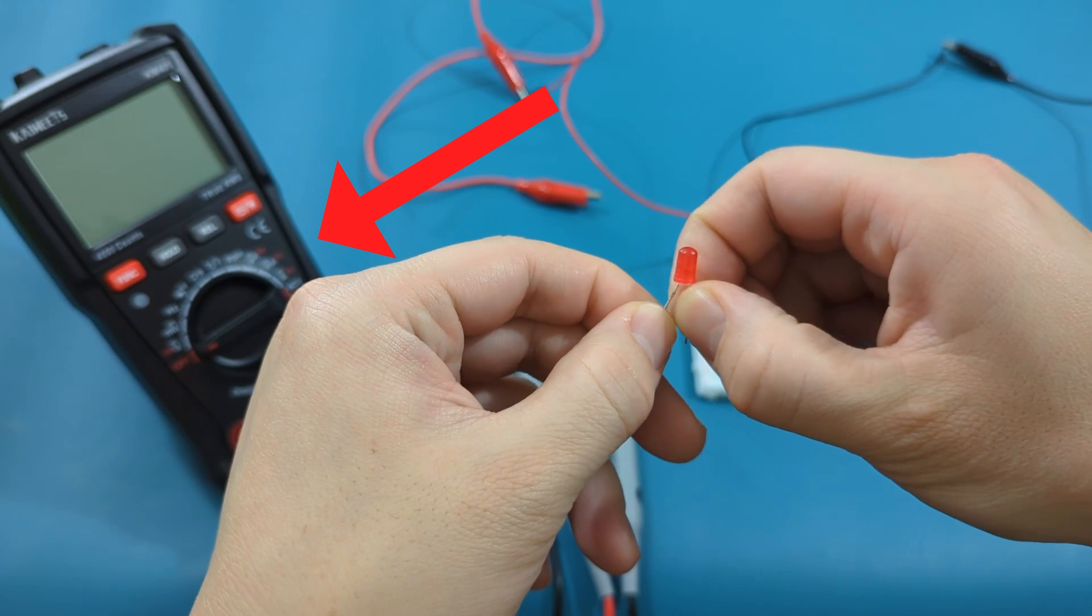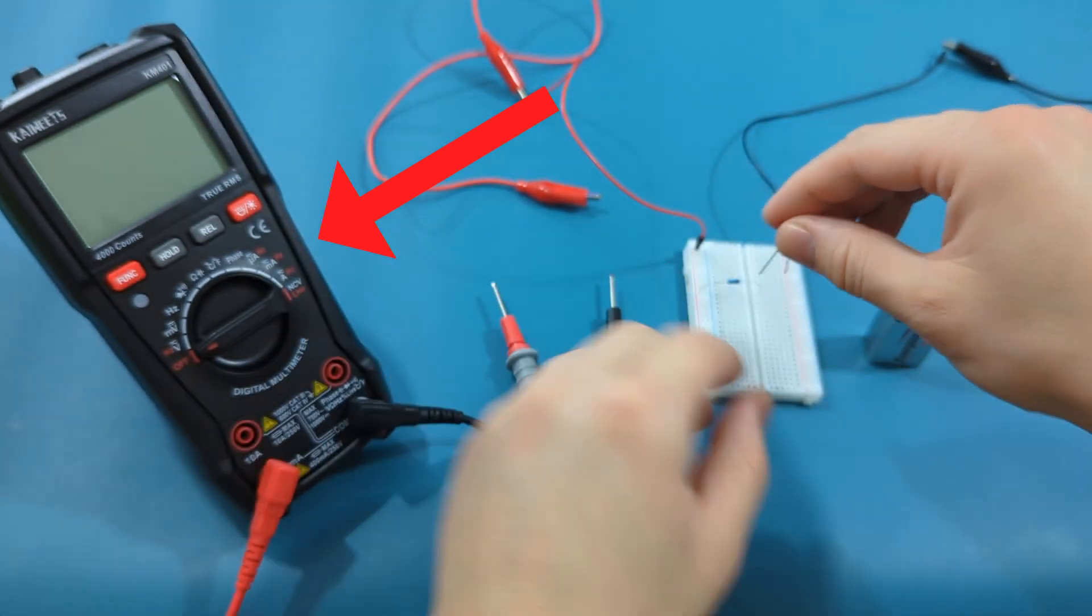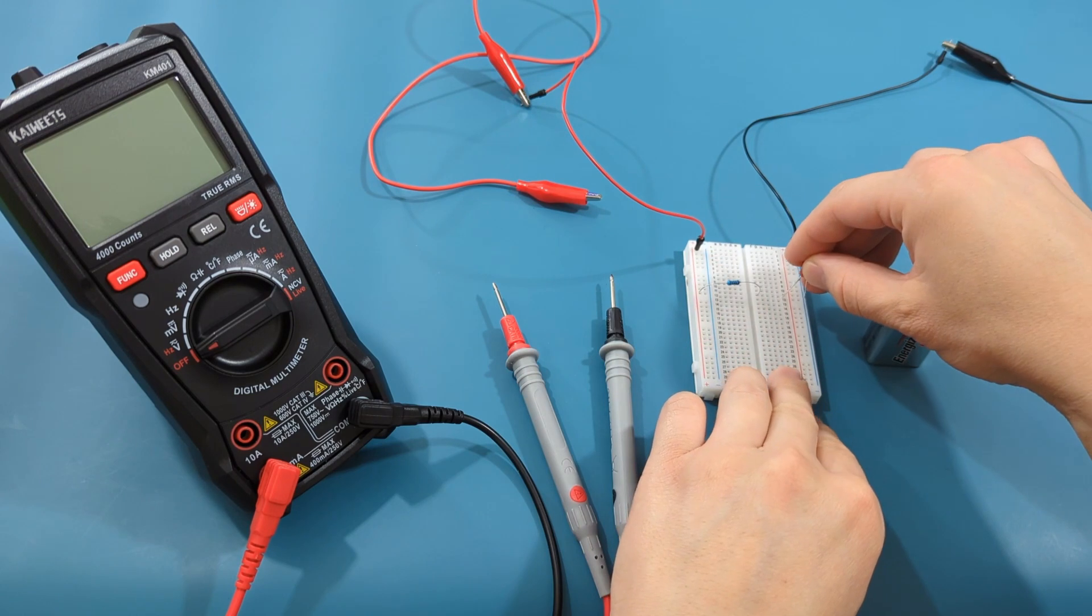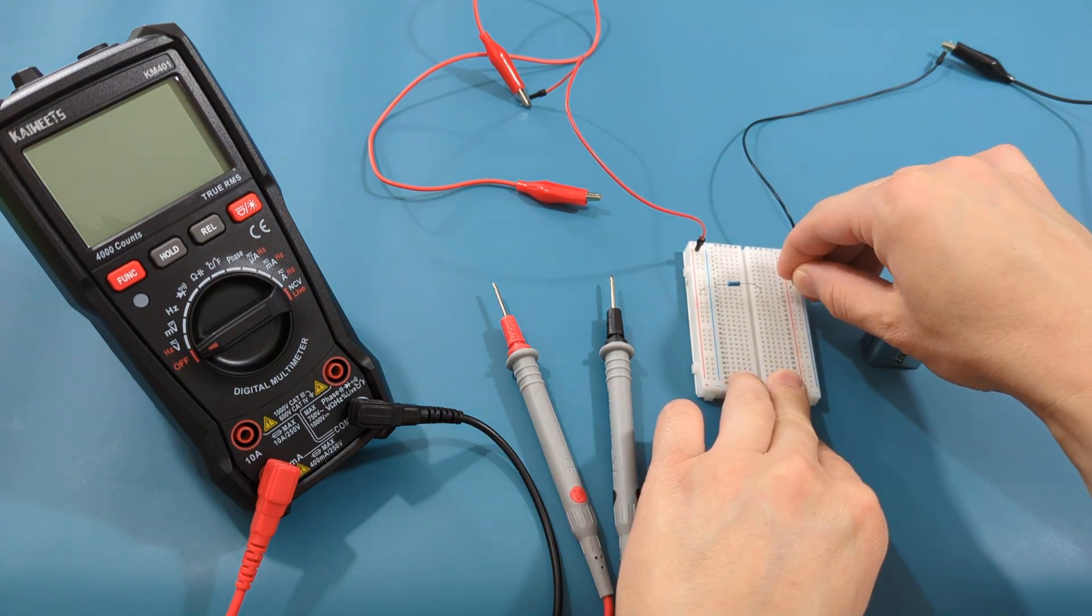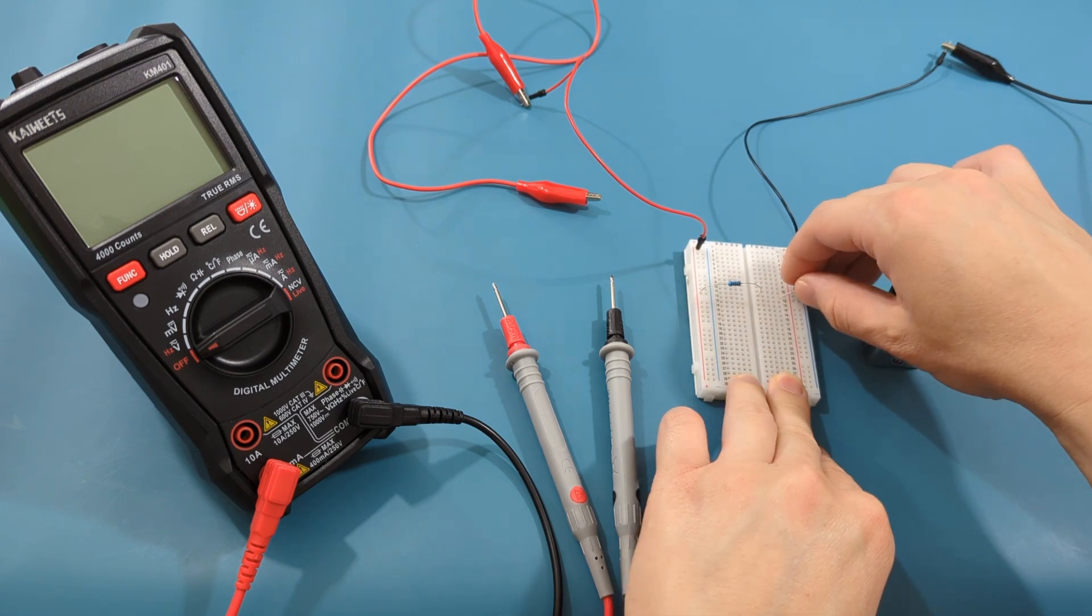Spread the wires a little bit and connect it to the breadboard. Connect the anode to the third column in the same row as the resistor. Connect the cathode in the same row as the anode and the same column as the black minus sign.